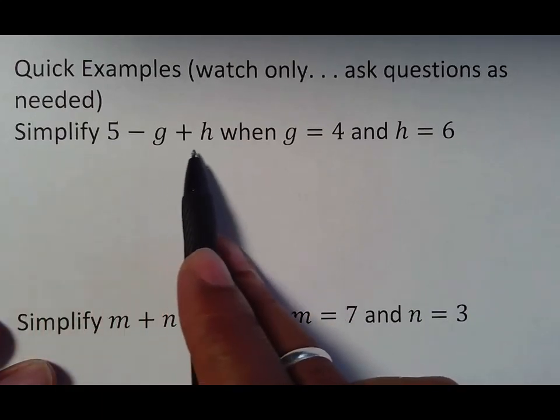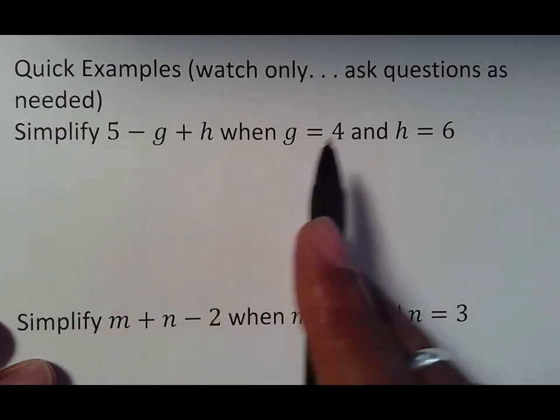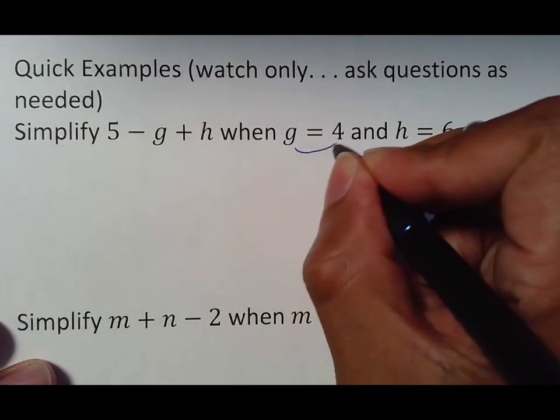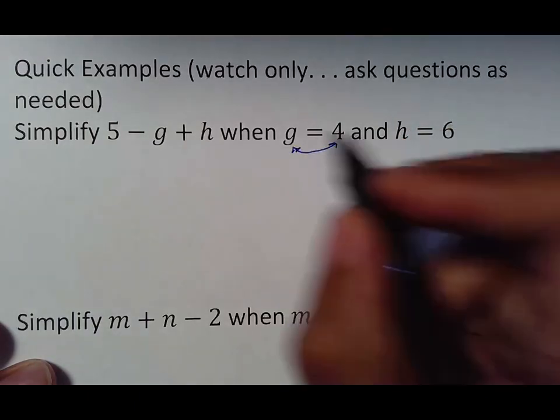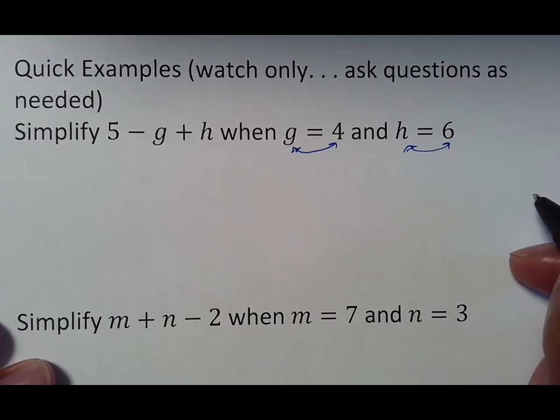So anyway, simplify 5 minus g plus h. We've never seen this. This is where people start to quit. But notice we have some statements here. It says g is equal to four, which means I can trade these two things because they're equal. And h is equal to six, I can trade these two things because they're equal.